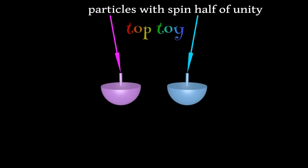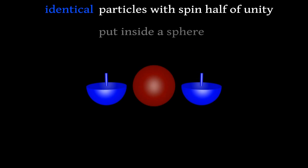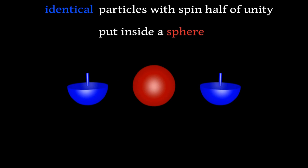Suppose these two particles are identical, that is they have the same internal properties or quantum numbers. We want to put them in the same place, for example, inside a sphere.